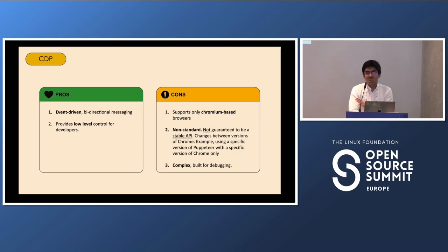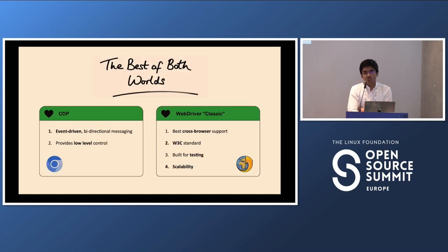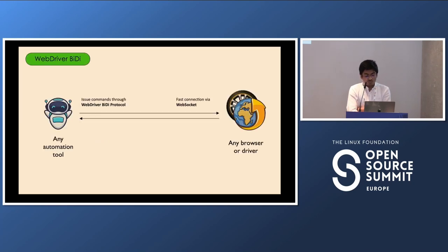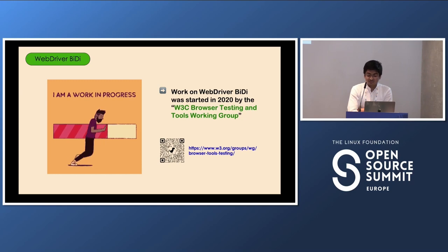Now with the advantages and disadvantages of both CDP and WebDriver Classic in hand — what if we take the best of both worlds, the advantages of CDP and the advantages of WebDriver Classic, and merge them into a single protocol called WebDriver BiDi? WebDriver BiDi works such that our automation tool can talk to any browser and any driver. Commands are issued through the WebDriver BiDi protocol and the connection is made via WebSockets. WebDriver BiDi is still a work in progress and was started in 2020 by the W3C Browser Testing and Tools Working Group.